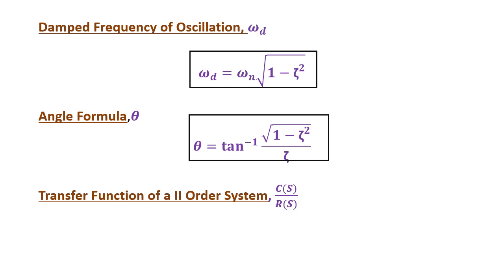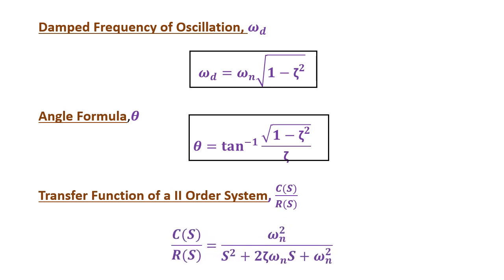The general second-order system transfer function C(s)/R(s) required for solving problems in unit 2 is: ωn² / (s² + 2ζωn·s + ωn²). From this transfer function, we extract the values of ωn and ζ to use in all the formulas of time domain specifications.